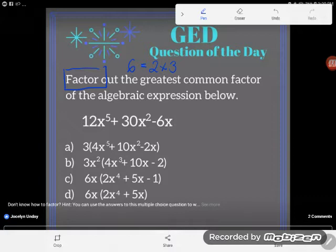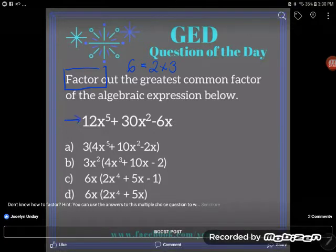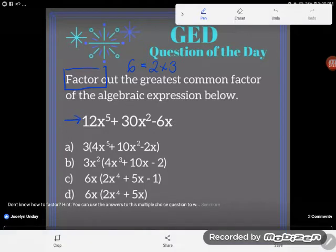A great test taking method is if you don't know how to work forwards, work backwards. And we said factoring was the opposite of multiplying, so instead of factoring this expression right up here and pulling out that greatest common factor,